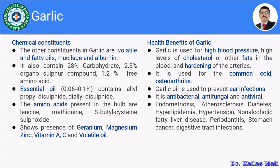Garlic contains approximately 28% carbohydrates, 2.3% organosulphur compounds, and 1.2% free amino acids. It comprises about 0.1% essential oil, which contains mainly alliin, allylpropyl disulphide, and diallyl disulphide. Amino acids present in the bulb include leucine, methionine, S-butylcysteine, and sulfoxide. It also contains germanium, magnesium, zinc, and vitamins A and C.